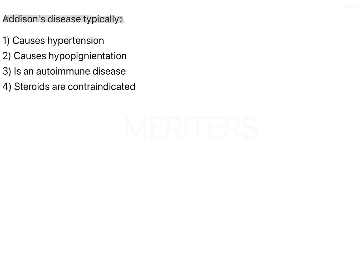Addison's disease: the options are — it causes hypertension, it causes hypopigmentation, it is an autoimmune disease, and steroids are contraindicated.